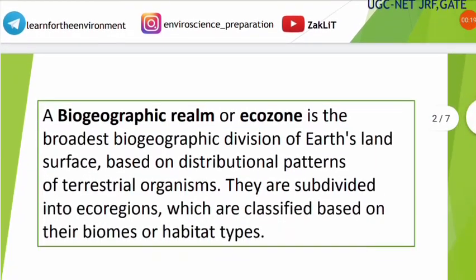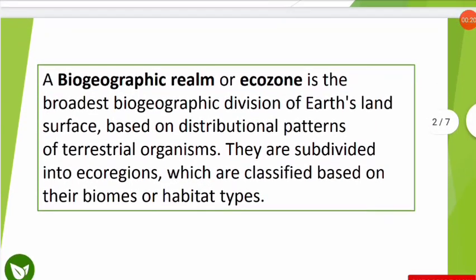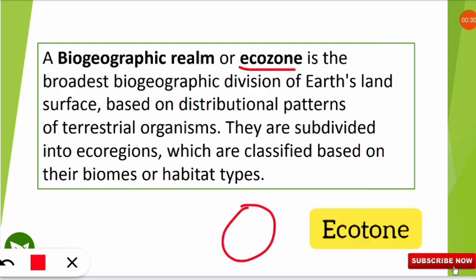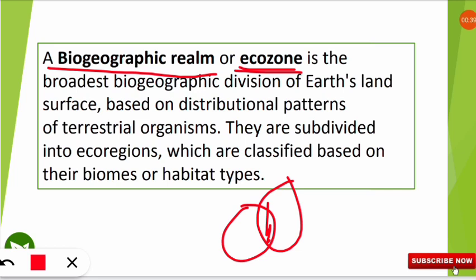Today we are going to learn about the biogeographic realm. The biogeographic realm is also known as ecozone. You should note that ecotone is the transition between two ecosystems — don't get confused between ecotone and ecozone. Ecozone is the biogeographic realm.